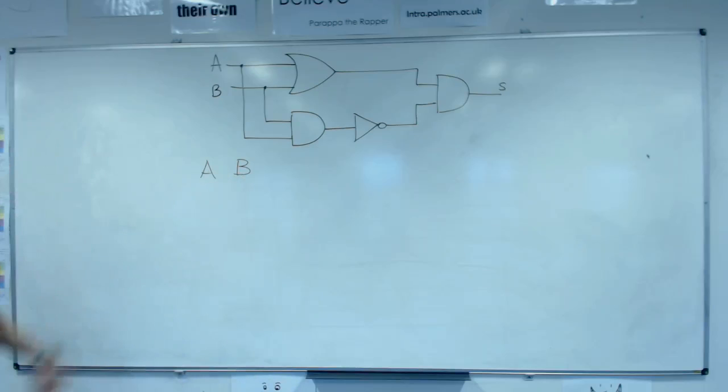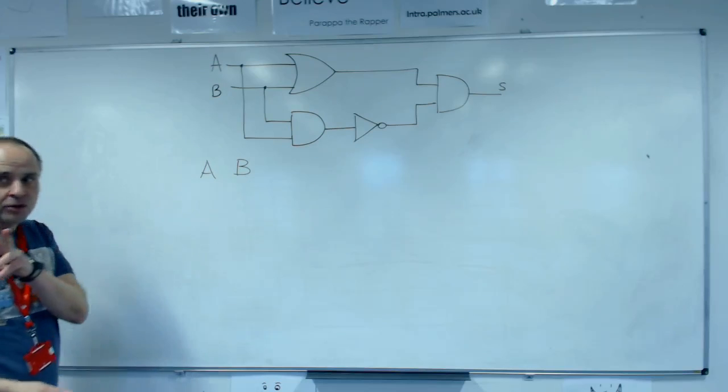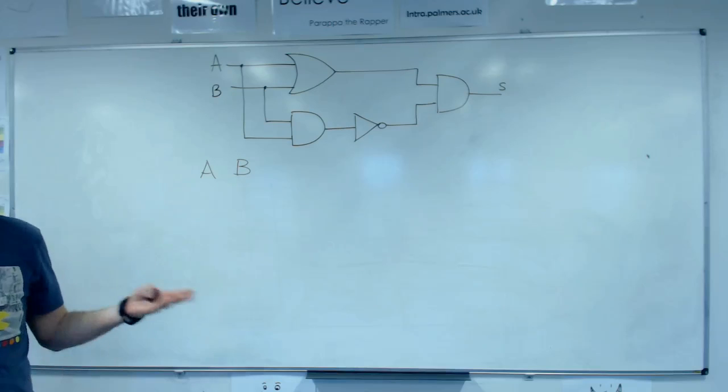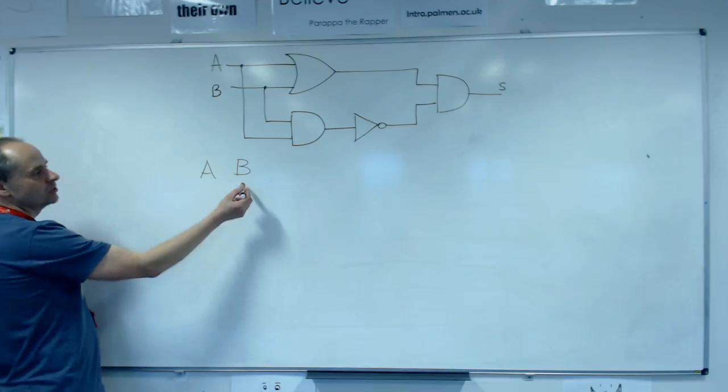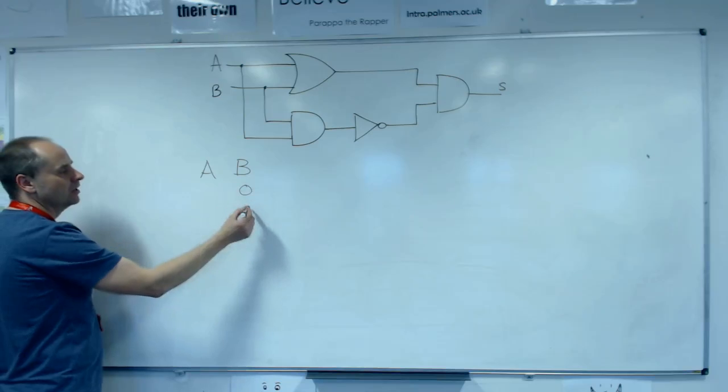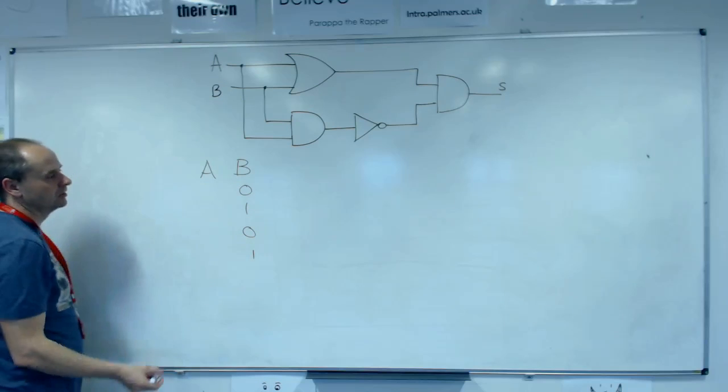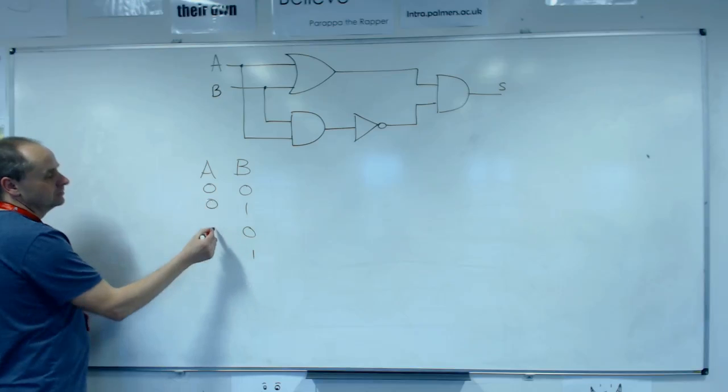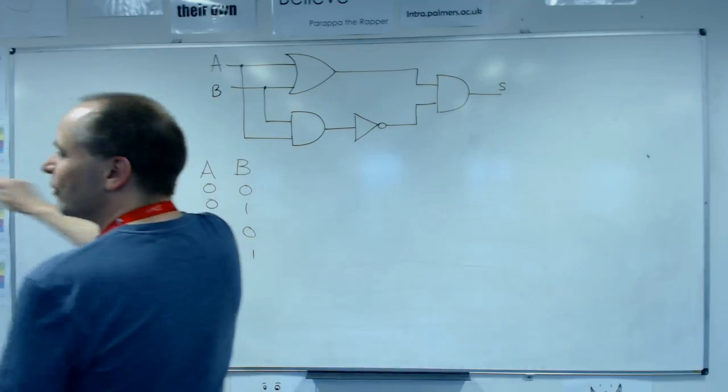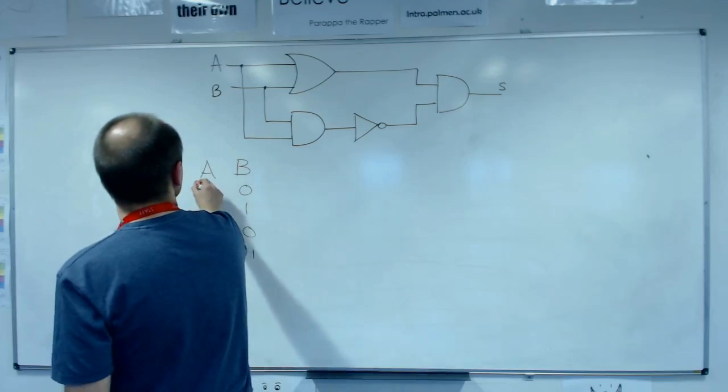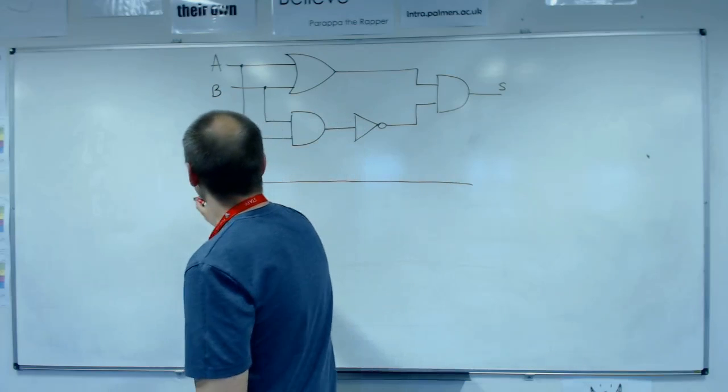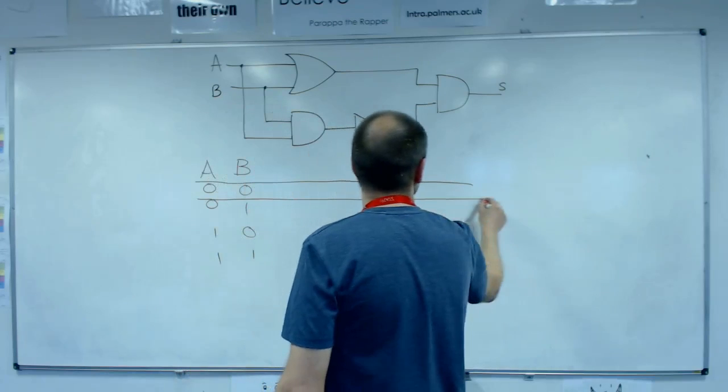So A and B, we've got two different inputs, so we're going to have four rows in our truth table because there's going to be four combinations. So start with the one on the right and just go alternating. With the A, that's going to alternate every two. I'm going to stand in front so I can draw a straight line. That's what went wrong last time. So I've got four gates, so I'm going to have four things that I need to draw up.